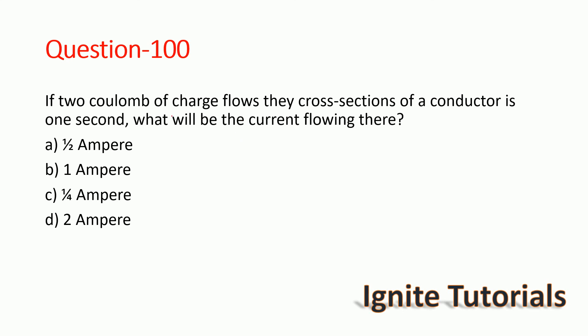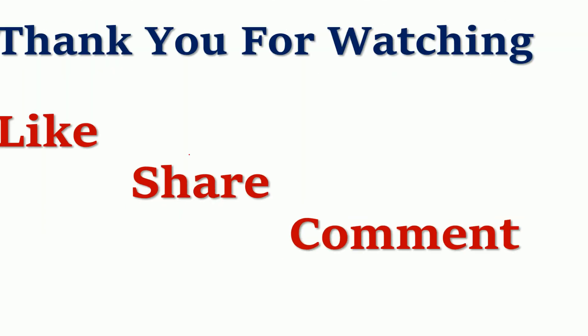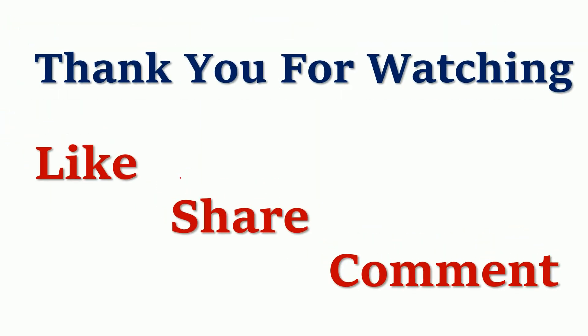Question 100: If two coulombs of charge flows through the cross-section of a conductor in one second, what will be the current flowing through it? The correct answer is two amperes — two amperes is the answer for the hundredth question.